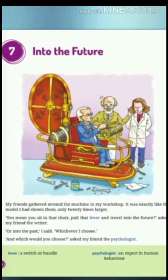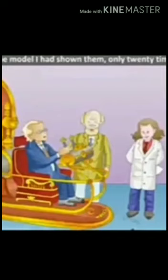Let's start our reading. My friends gathered around the machine in my workshop. It was exactly like the model I had shown them, only 20 times larger. 'You mean you sit in the chair, pull that lever and travel into the future?' asked my friend, the writer. 'Or into the past,' I said, 'whichever I choose.' The narrator is showing his time machine to his friends. This machine is 20 times larger than the model he had shown them earlier. His friend, who is a writer, asked him how it works. The narrator informed him it goes to the future and to the past.